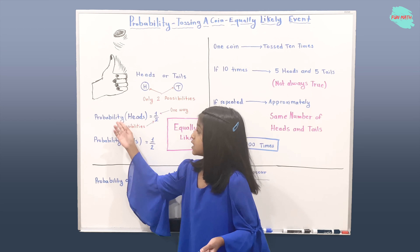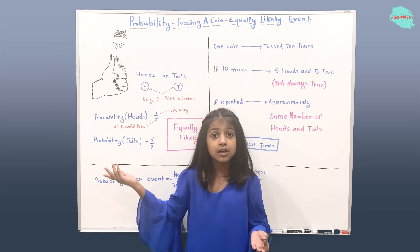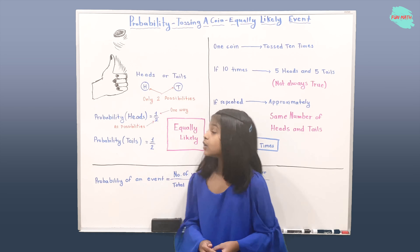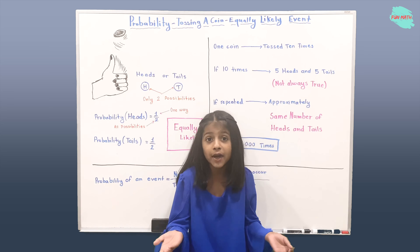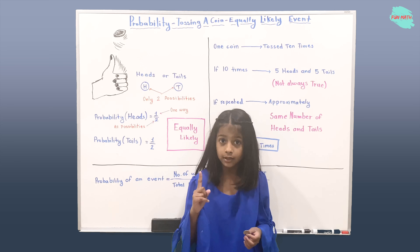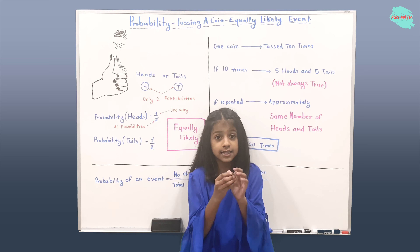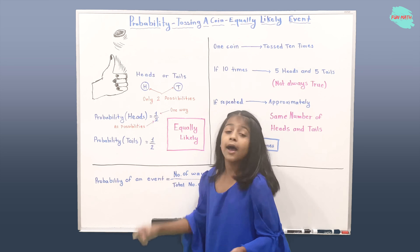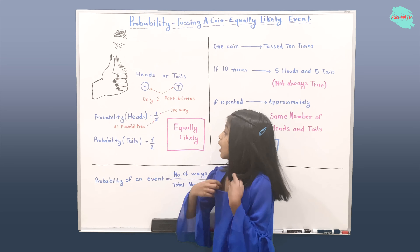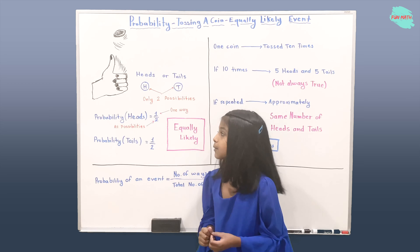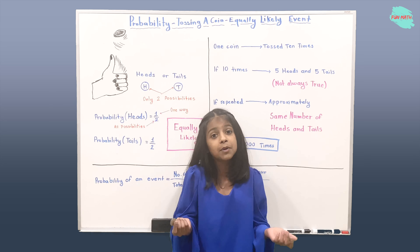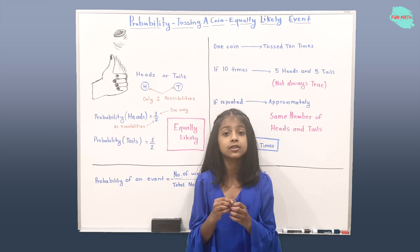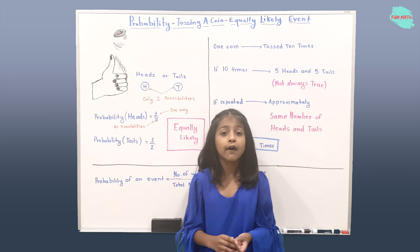Let's find the probability of getting heads. It's one over two. How? How many ways are there to get heads? There's one. There are two sides and there's only one head, so that's why there's one as our numerator. How is there two on the bottom as our denominator? How many possibilities are there? There are two possibilities: heads and tails. That's why we have two as our denominator.